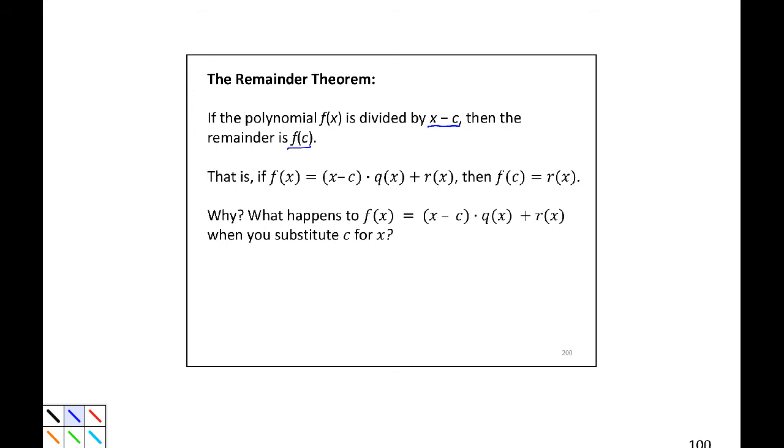That is, if f of x equals x minus c, we're dividing by that, times our quotient plus our remainder, then f of c equals r of x.